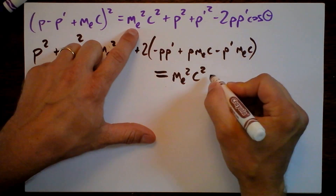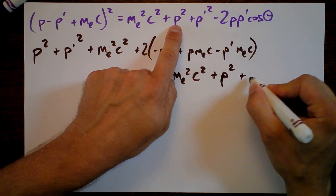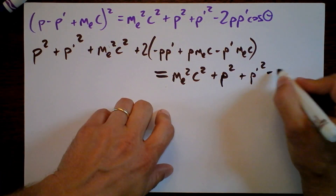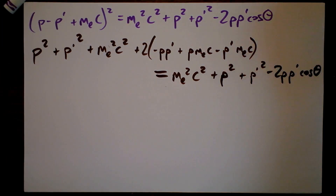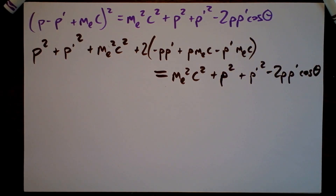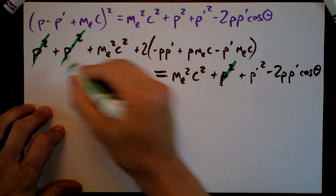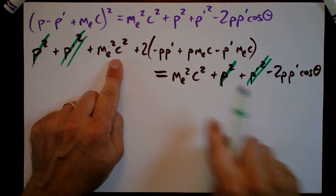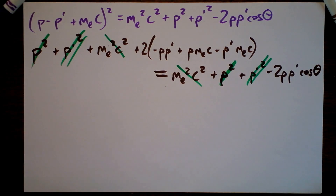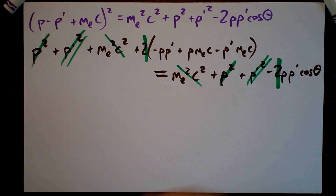Mass of the electron squared times c squared, plus the momentum of the photon initially squared, plus the momentum of the photon afterwards squared, minus two times p p prime times cosine theta. And stuff cancels — that's why we're here. Those p squared terms cancel, right next to them those p prime squared terms cancel, and the m_e squared c squared terms cancel. And even a factor of two cancels. The equation is now wonderfully simple.